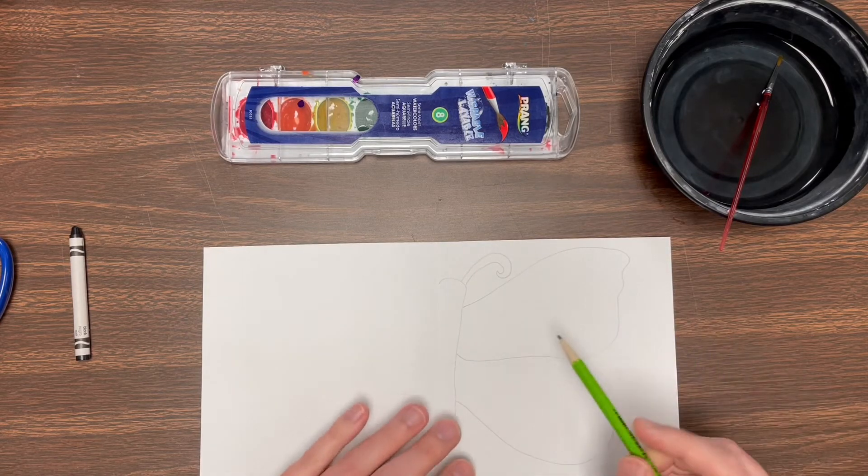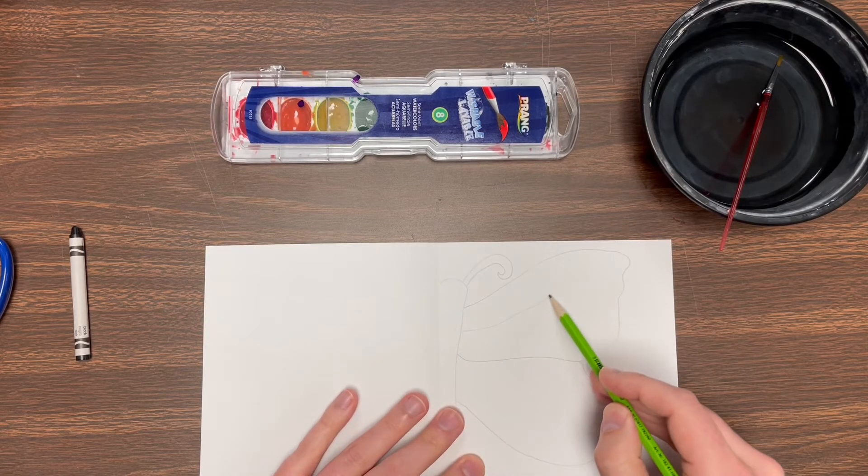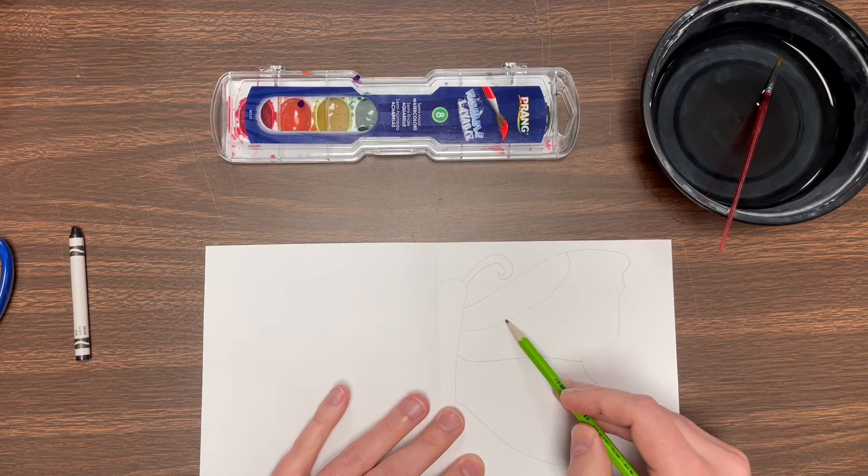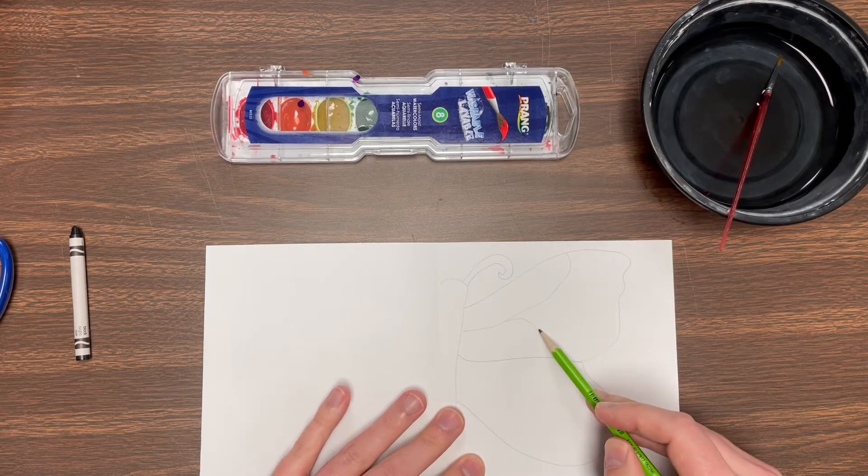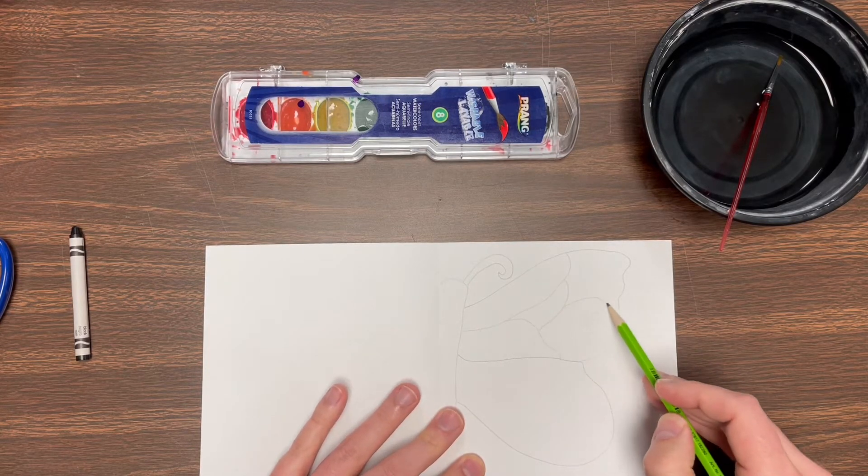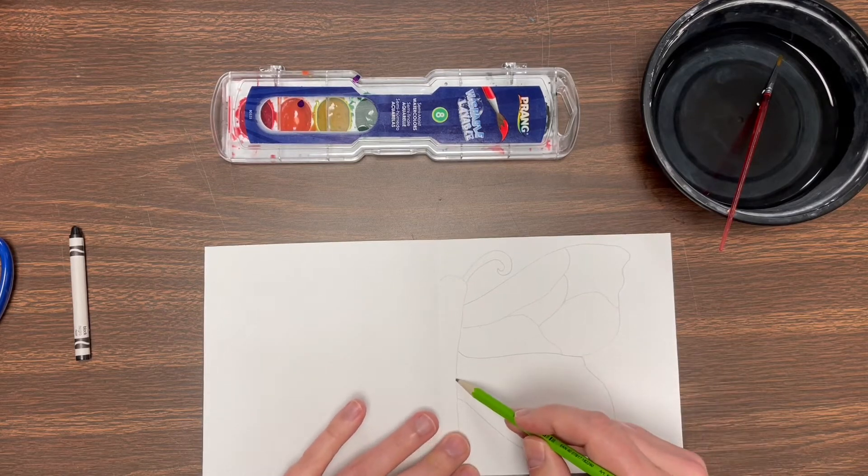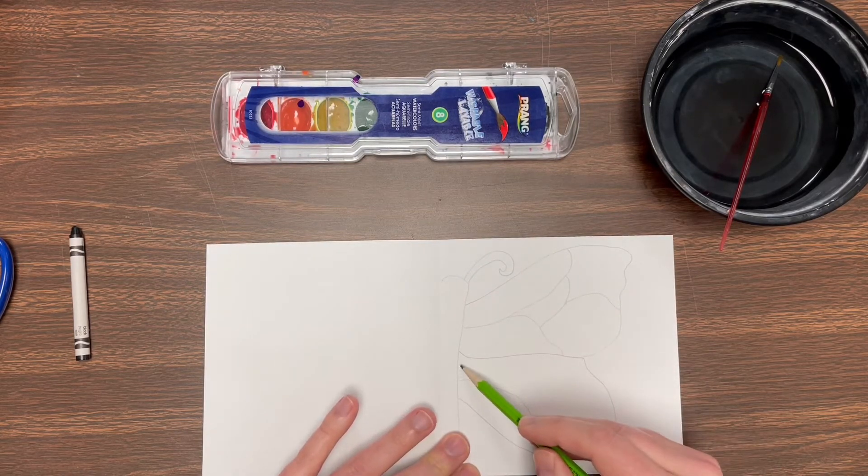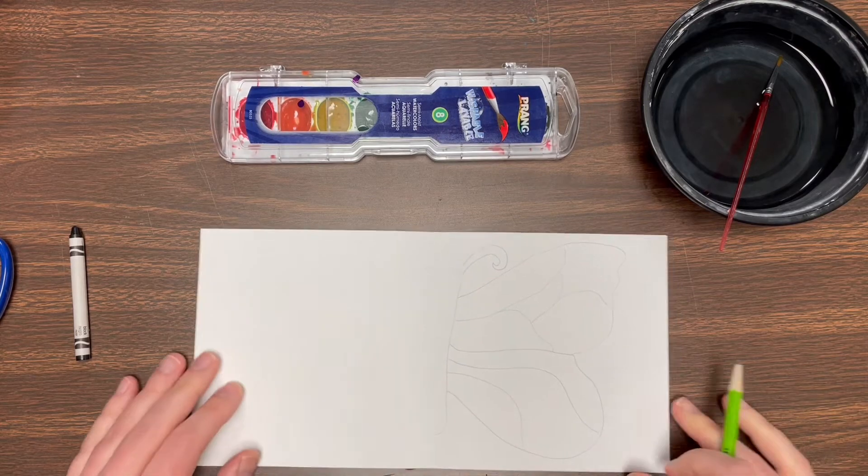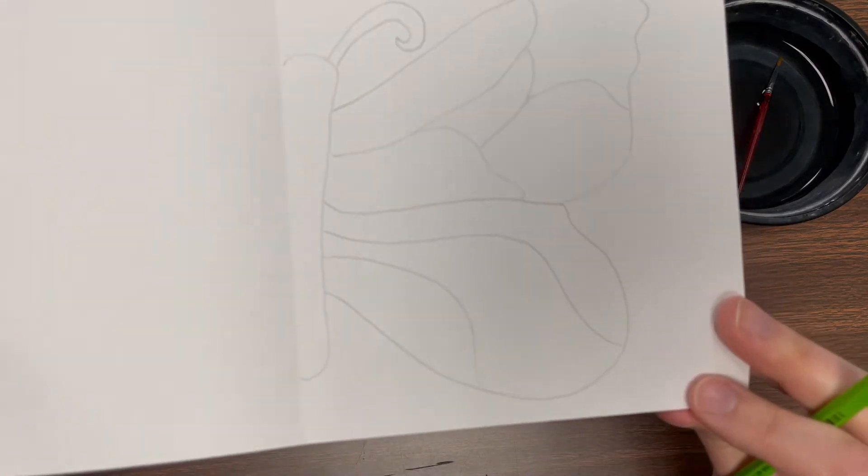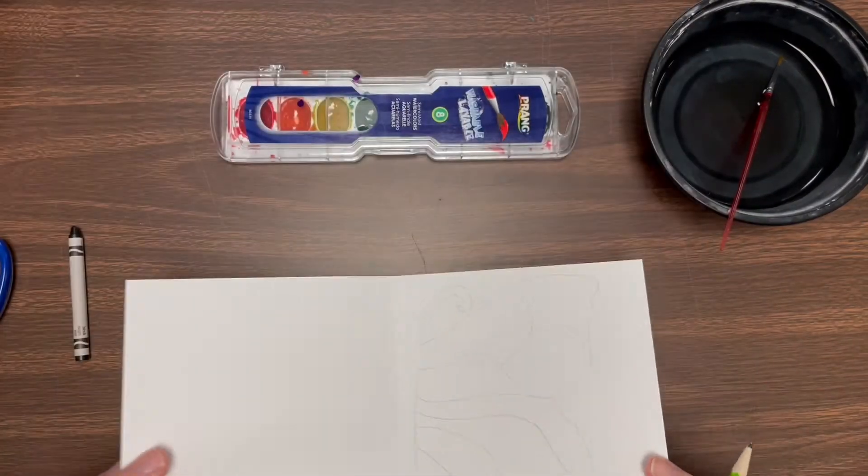Then I'm gonna draw those lines that you see inside of a butterfly. You can make these any kind of way you want. You can just make a couple, or if you want to make a whole bunch. You're the artist. I'll let you decide how many you do. So I'm only drawing half of my butterfly.